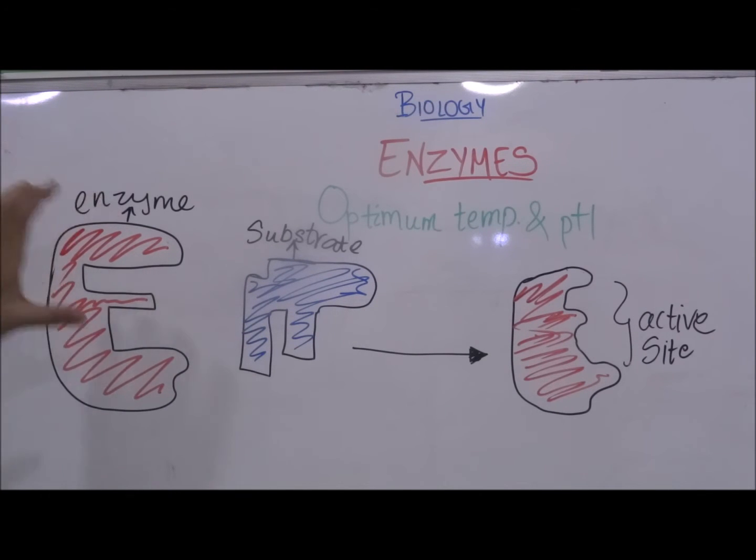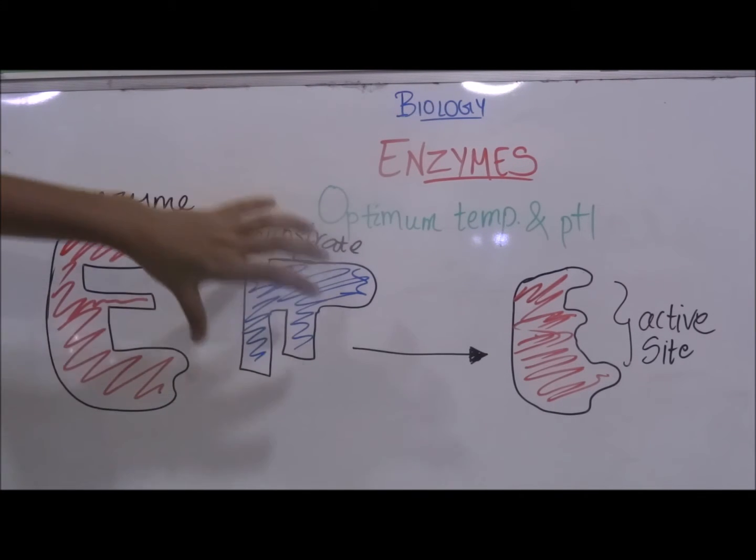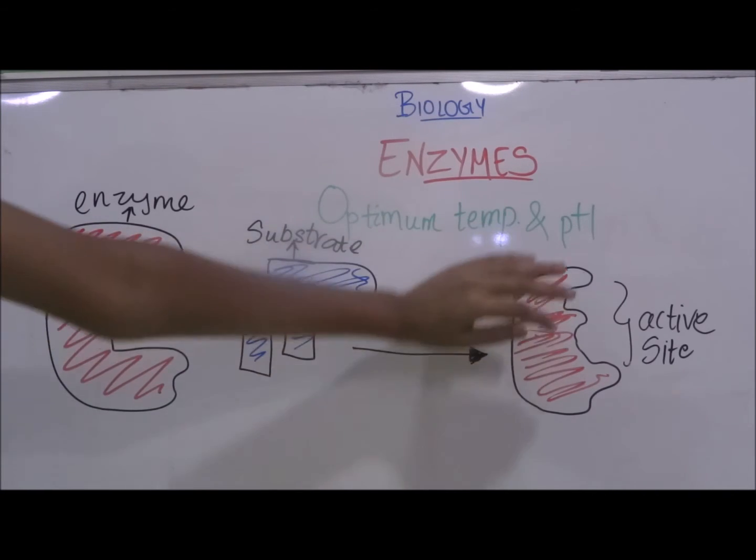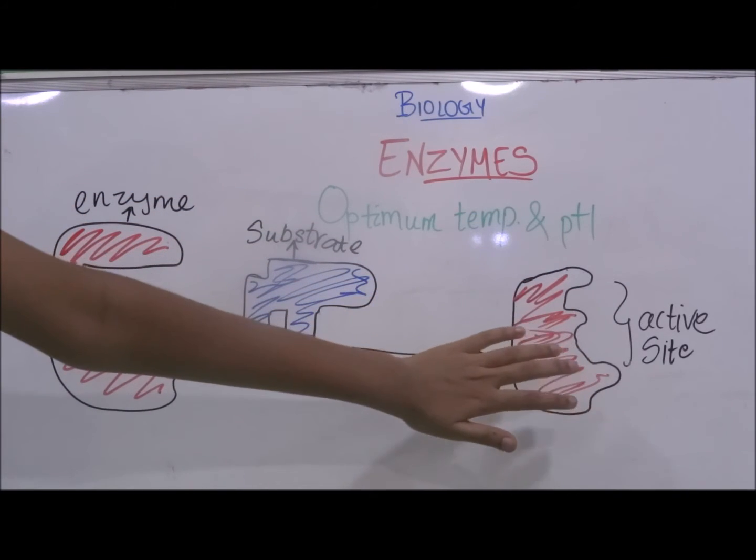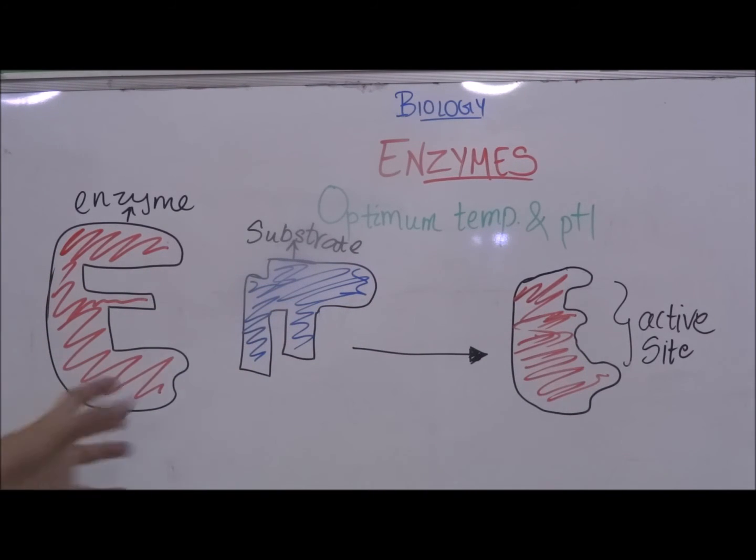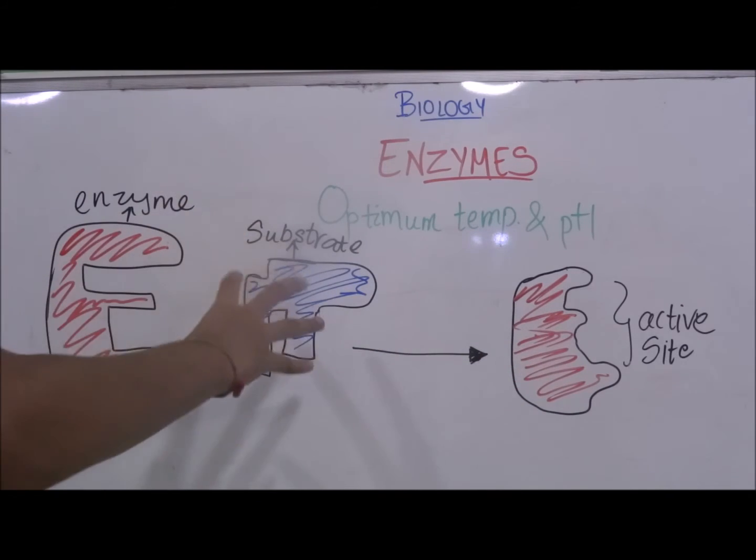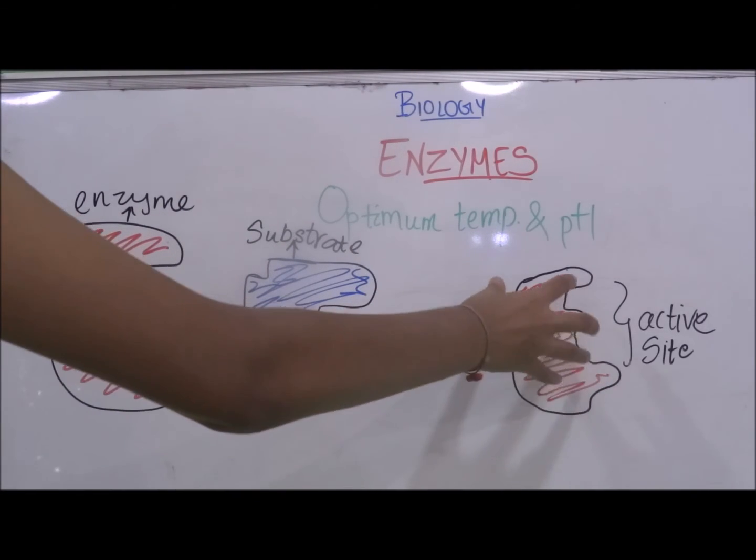Which means that when this is the active site the substrate cannot fit exactly into the active site. But here the enzyme has lost its active site the shape of its active site and so the shape of the substrate is not complementary. And the substrate cannot fit into the active site here.